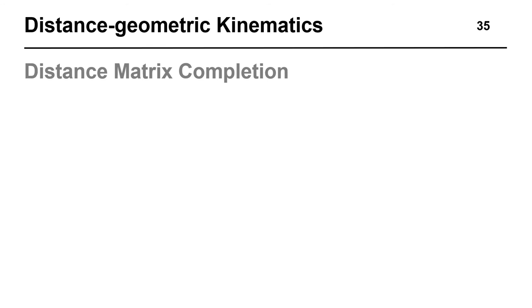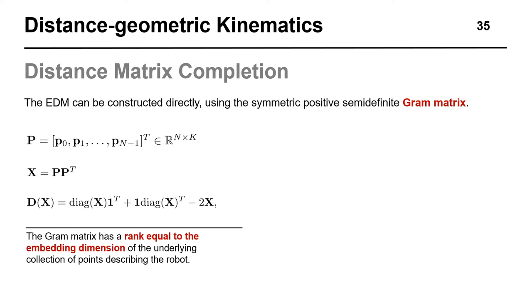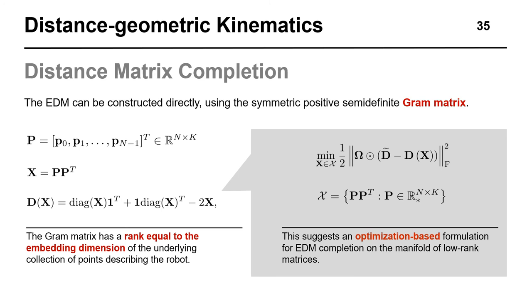So, the Euclidean distance matrix can be constructed directly in matrix form using the so-called Gram matrix. By arranging points into matrices, we obtain the Gram matrix using a simple matrix product. Then, the Euclidean distance matrix can be obtained by using a simple linear identity. This suggests that Euclidean distance matrix completion can be formulated as a local optimization problem over the manifold of Gram matrices of rank equal to that of the embedding dimension of the point set. Note that the linear operator omega is used to select the distances defining the inverse kinematics problem from the matrix of known distances d tilde and the distance matrix constructed using our decision variable.